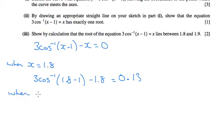For 1.9, I get negative, so that's good, negative 0.55.